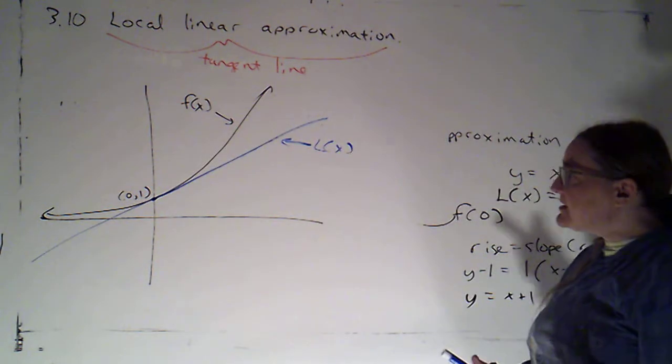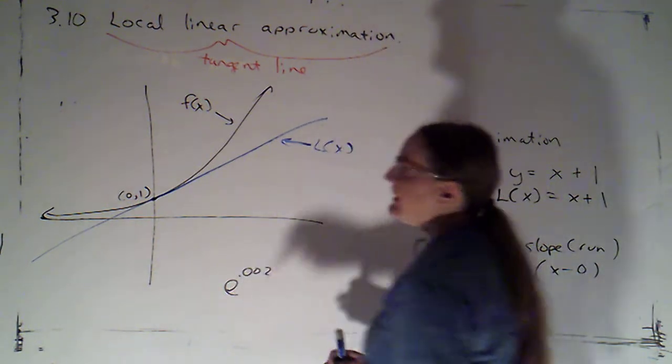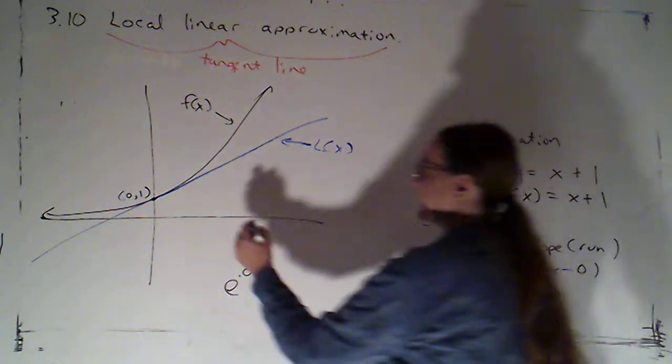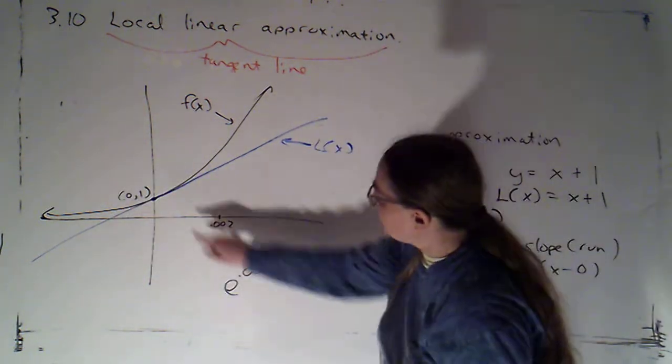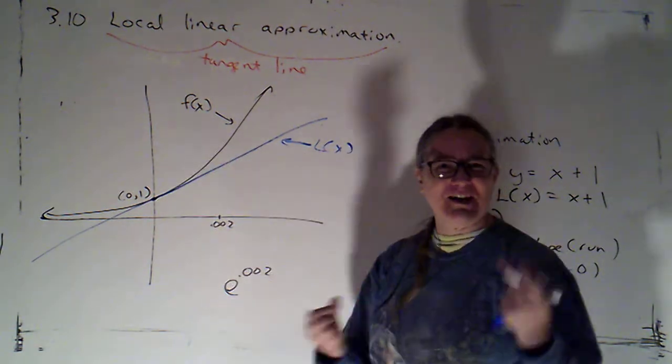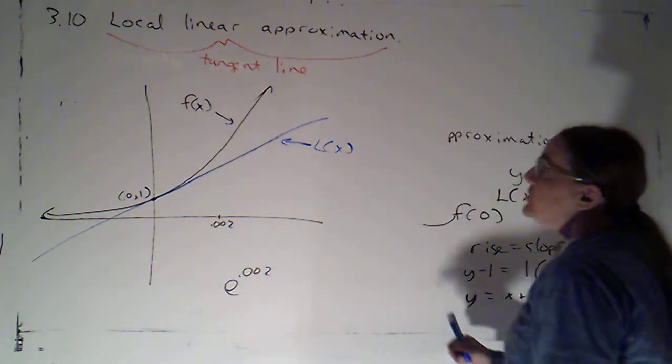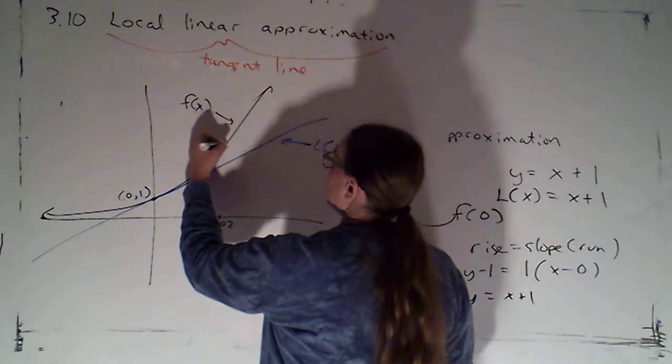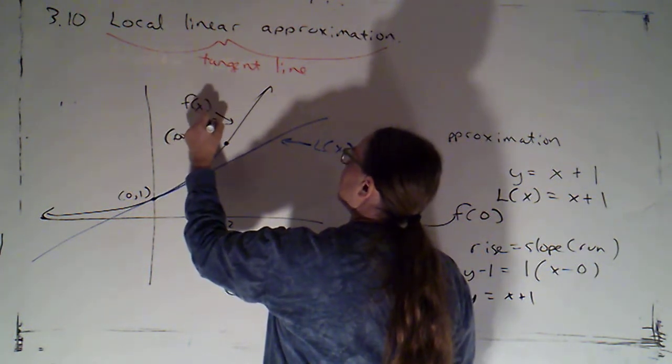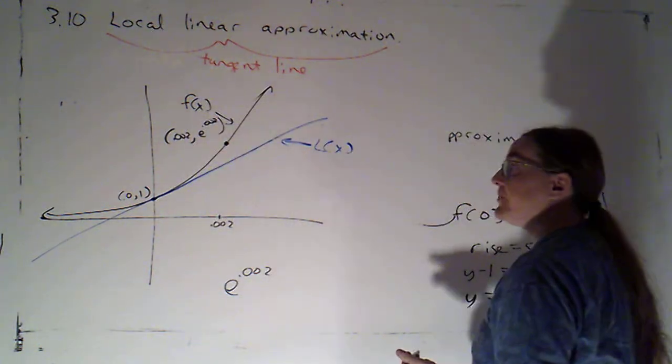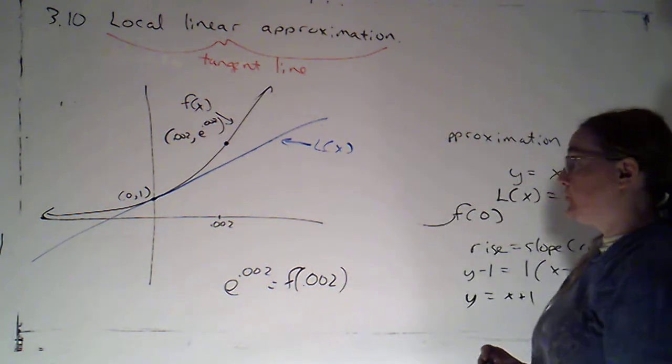And we're being asked to estimate e to the 0.002. Now again I'm going to completely exaggerate my scale. I'm going to put 0.002 way over here because you can see here the line and the curve are so close, it's going to be hard to visually see the distinction between them. So e to the 0.002, that's the y value on the graph of the curve, so I can say that's f evaluated at 0.002. I do want to just confirm that the number that appears here actually is the number I would plug into this function.